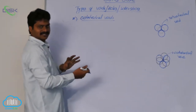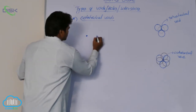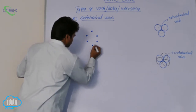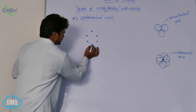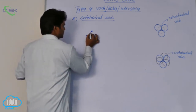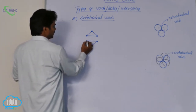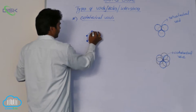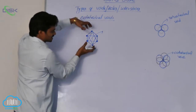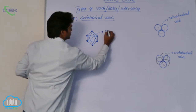Now see the open structure for the formation of an octahedral void. These are spheres of one layer, and these 3 are spheres of the next layer. One triangle has its vertex downward and the other has its vertex upward. If you join all these spheres, you will get an octahedron. So the empty space formed inside by all 6 spheres of the 2 layers is called an octahedral void.